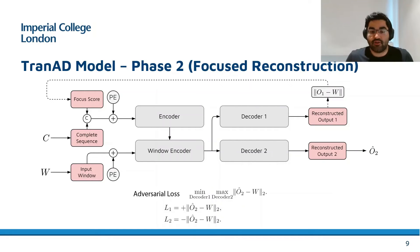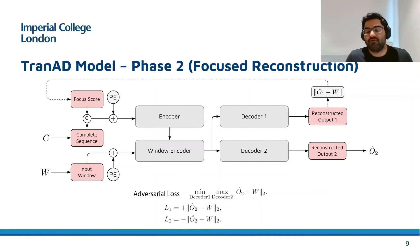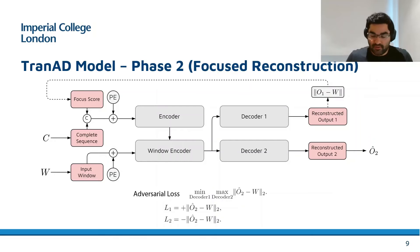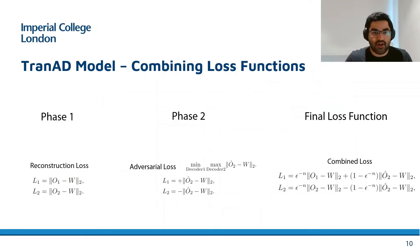Hence, the output of the second phase is not a good reconstruction, whereas decoder 1 wants to fool decoder 2 by forcing it to minimize this loss. Now that we have loss functions for both phases, we need to determine the cumulative loss function for each decoder. For this, we use an evolutionary loss function, as shown here.